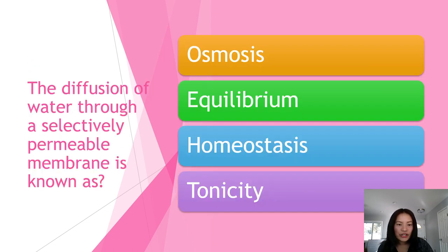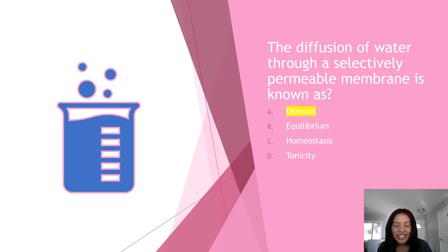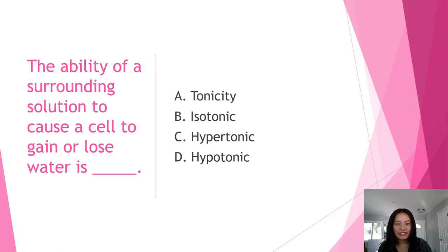Next question: the diffusion of water through a selectively permeable membrane is known as what? A) osmosis, B) equilibrium, C) homeostasis, or D) tonicity? The answer is osmosis. Osmosis is a process by which the molecules of a solvent pass from a solution of low concentration to a solution of high concentration through a semi-permeable membrane.